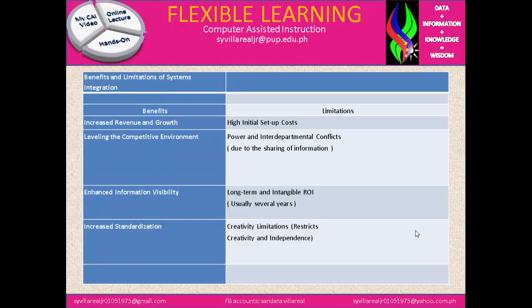We have here the benefits and limitations of system integration. The first benefit is increased revenue and growth, and its limitation is high initial setup costs. The second one is leveling the environment, with a limitation of power and interdepartmental conflicts due to the sharing of information. The third one is enhanced information visibility, with a limitation of long-term and intangible ROI, usually several years.